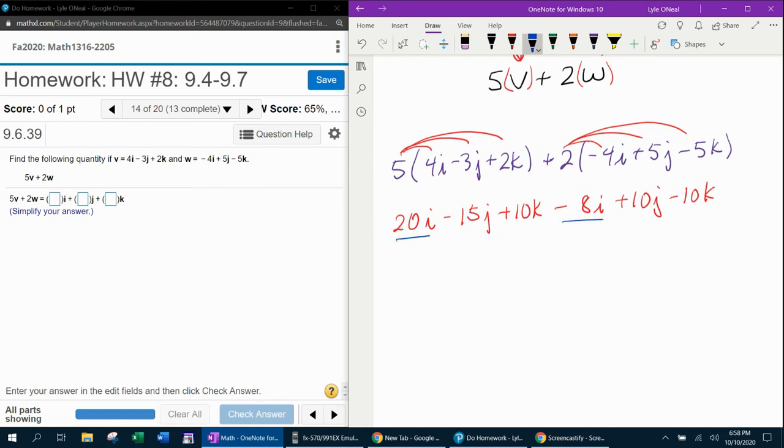Now to CLT. 20I minus 8I, that's going to be 12I. Next, negative 15J plus 10J, that is a negative 5J. And last but not least, we have plus 10K minus 10K. Those go away.